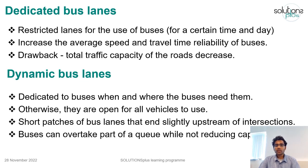A variation of dedicated bus lanes is dynamic bus lanes. In this case, lanes are dedicated to buses only when and where the buses need them — otherwise they are open for all vehicles to use. This is done by designing short patches of bus lanes on the road that end slightly upstream of the intersections, allowing buses to overtake part of a queue at intersections while not significantly reducing overall capacity.